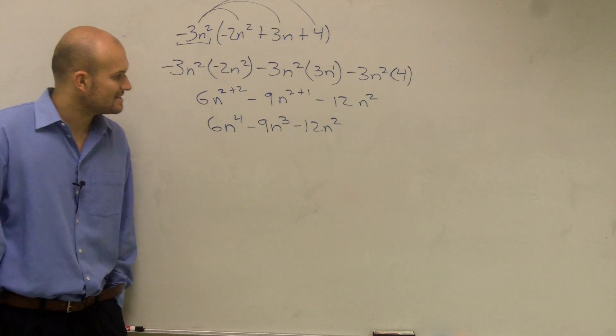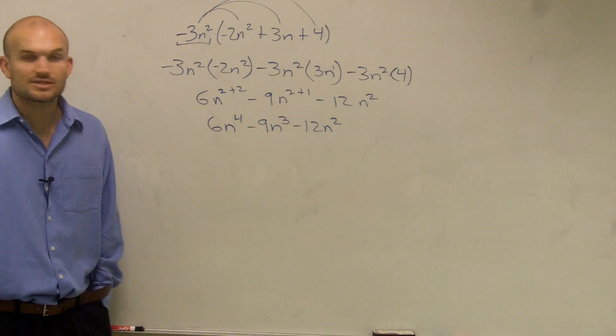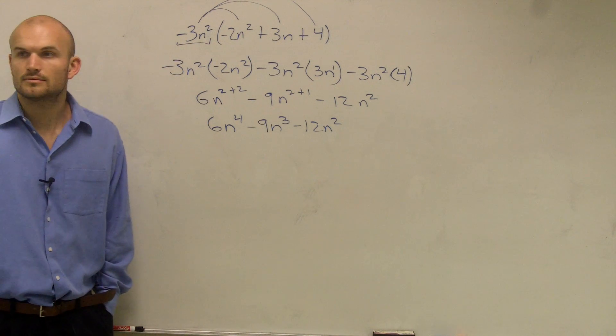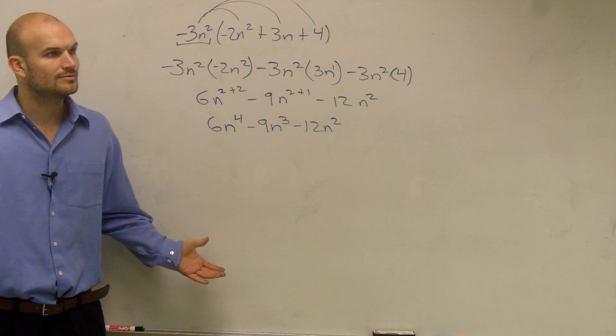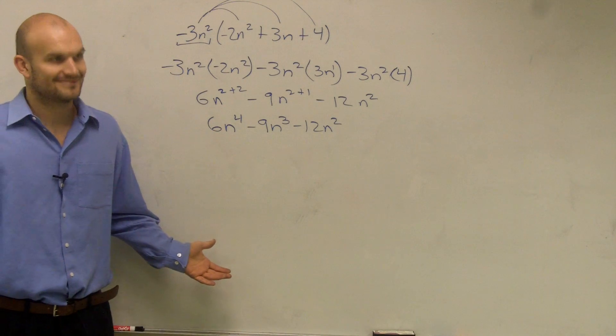So the final answer is 6n to the fourth, minus 9n cubed, minus 12n squared. And there you go.